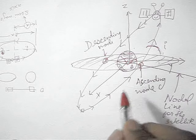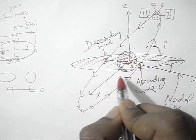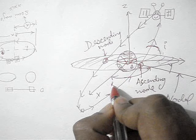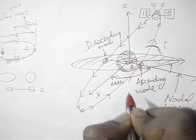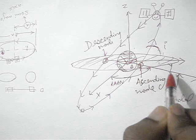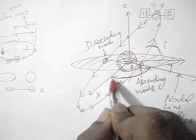Now the angle between the nodal line and the x-axis of the ECI frame is called the right ascension of ascending node, or RAAN. We need to consider the angle from the ascending node side of the nodal line. So this angle is our RAAN.